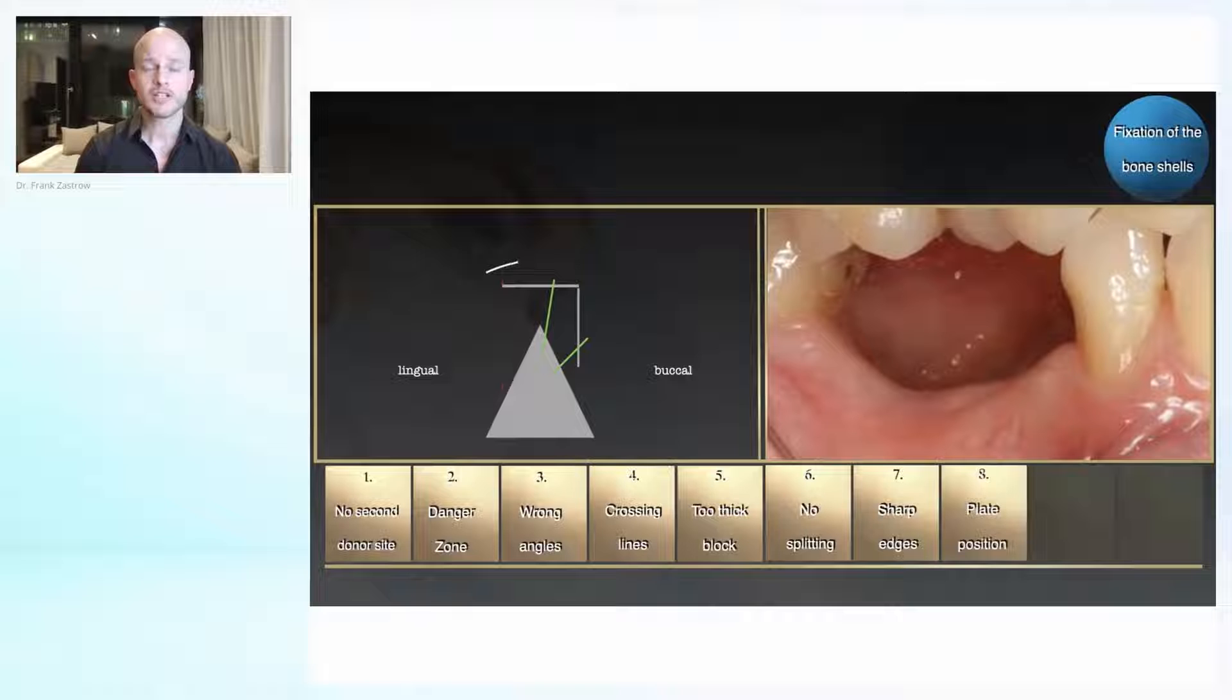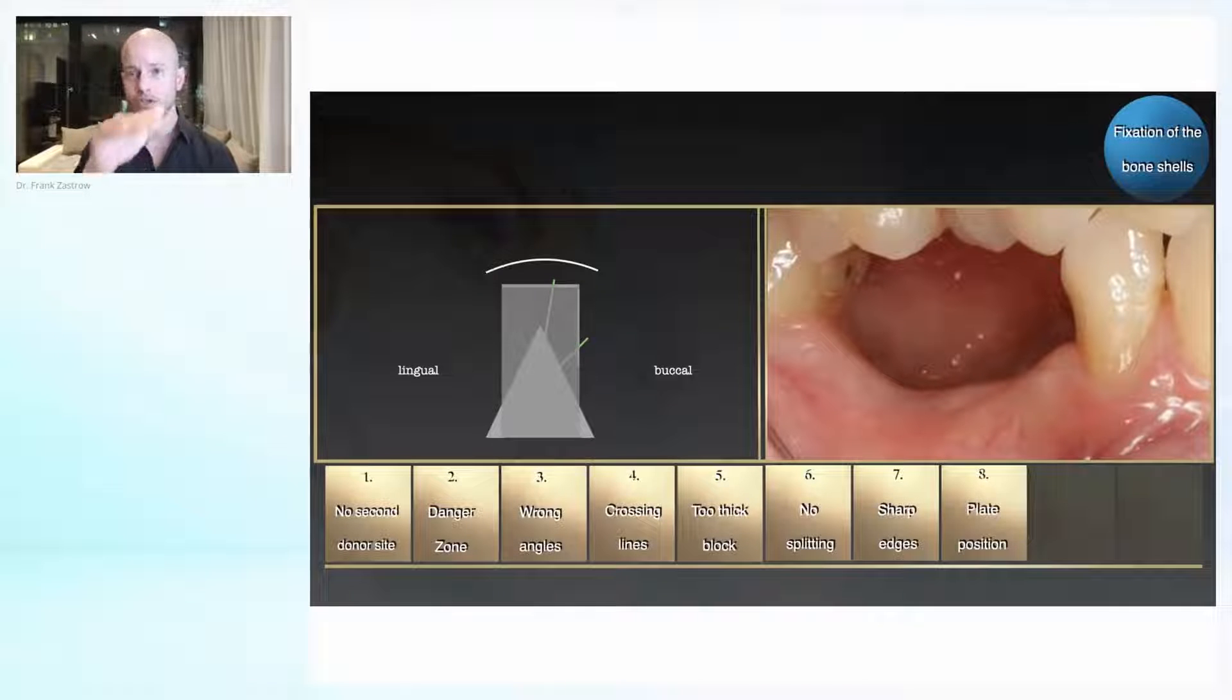Also, what is very important is when you have this nice support for the soft tissue, you should watch out that your plate—now look very carefully to the plate on the occlusal part—if this plate is changing the angle slightly, then you're creating an edge on one side and it can open up on that side.